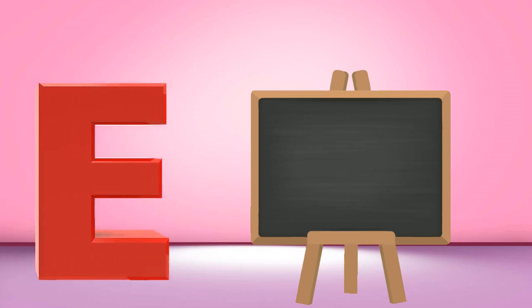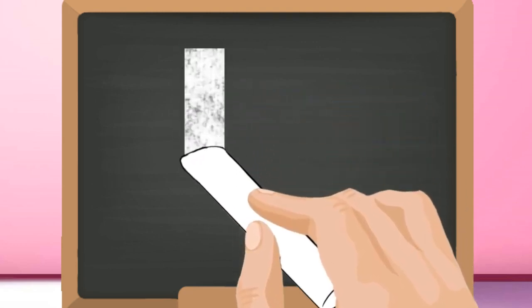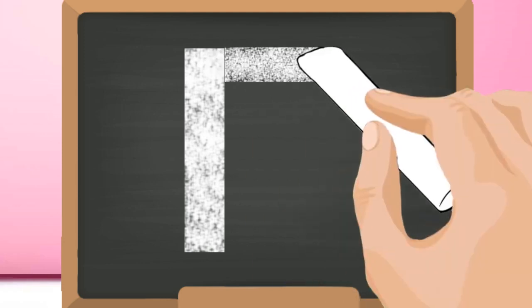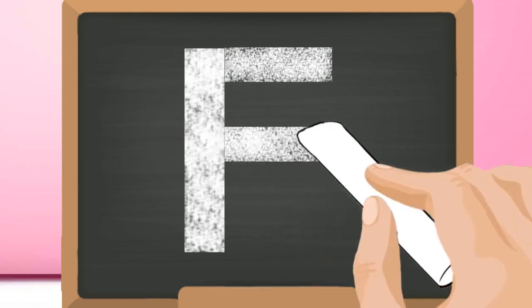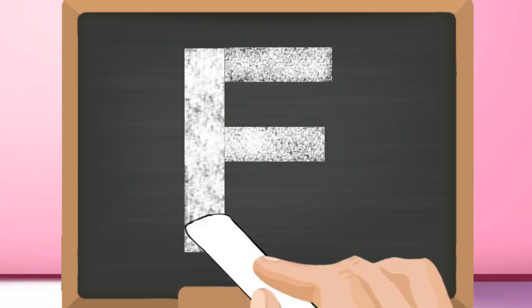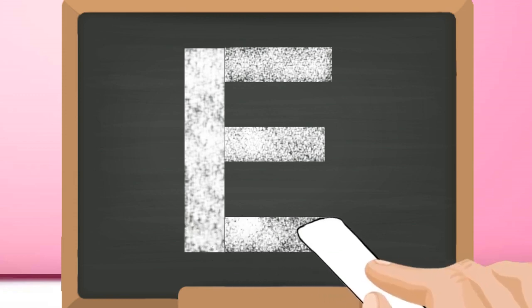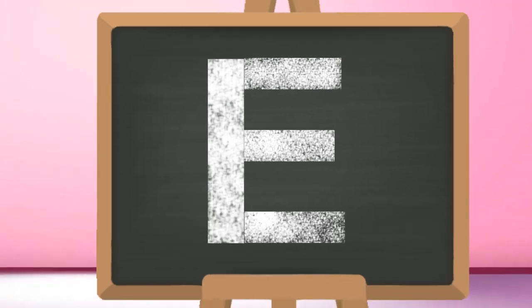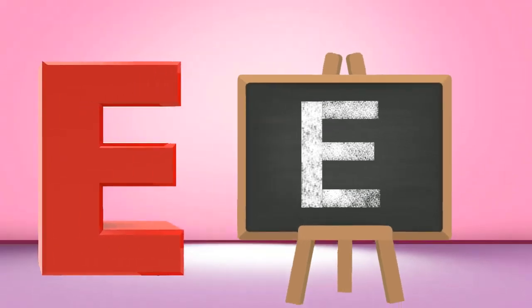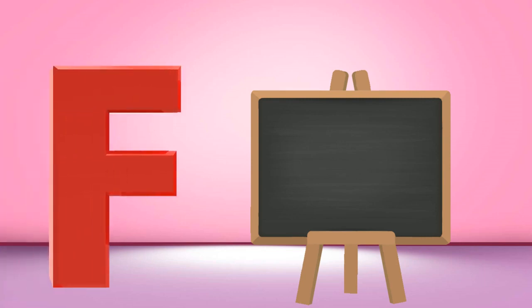E, capital E. Start from the top and draw a standing line down. Go again to the top and draw a slanting line to the right. Then go to the middle and draw another line. Lastly, go to the bottom and draw one more line in the same way. Capital E.